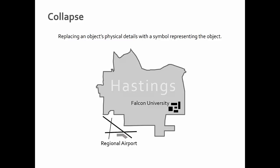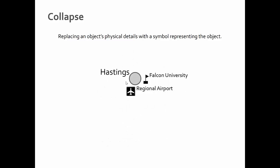Collapse is replacing an object's physical details with a symbol representing the object. For example, this is the city of Hastings, Minnesota, with a university — you've got individual buildings, the city outline, and a regional airport with runways visible. At a smaller scale you wouldn't have the space to show all that, so instead you collapse: Hastings becomes a big circle, the university gets a flag symbol, and the airport becomes an airport symbol.